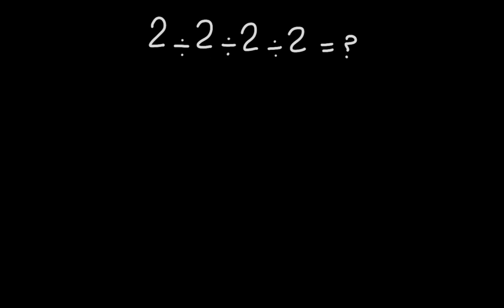We have 2 divided by 2 divided by 2 divided by 2. 2 divided by 2 gives us 1. 2 divided by 2 gives us 1. 1 divided by 1 gives us 1. But this answer is not correct.